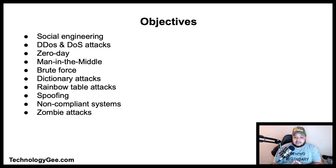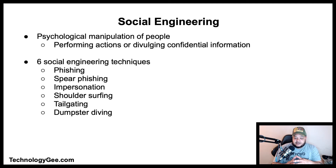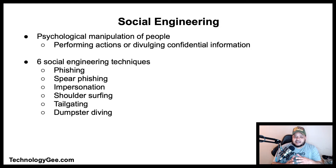Let's talk about social engineering. In the context of information security, social engineering is the psychological manipulation of people into performing actions or divulging confidential information. This differs from social engineering within the social sciences, which does not concern the divulging of confidential information. Six common social engineering techniques you need to know for the CompTIA A+ 220-1002 exam are: phishing, spear phishing, impersonation, shoulder surfing, tailgating, and dumpster diving.